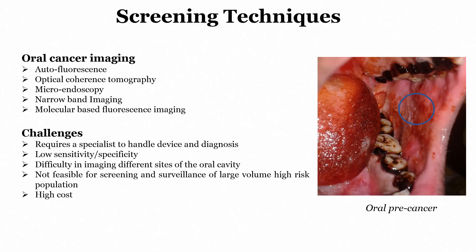Looking at the slide, there are different kinds of imaging techniques used for oral cancer screening. First is autofluorescence, second is optical coherence tomography (OCT), next is micro endoscopy, then narrow band imaging, and finally molecular based fluorescence imaging. These are the techniques used to screen based on imaging.